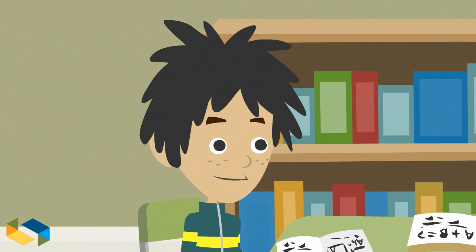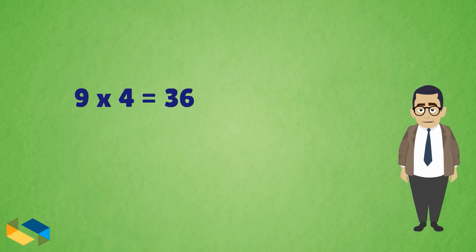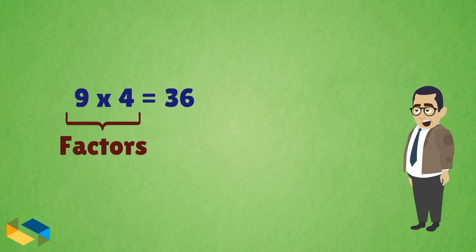Mr. Roy, how is division related to multiplication? Let me explain with an example. We have 9 times 4 as 36. 9 and 4 are factors of 36, and 36 is the multiple.